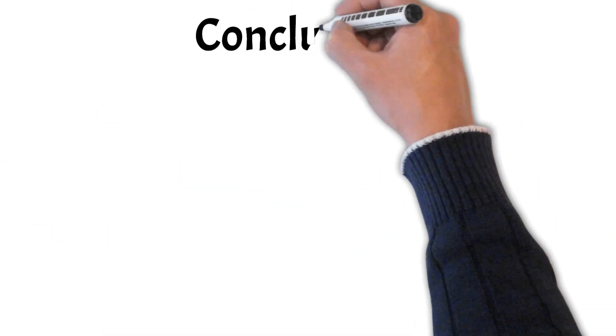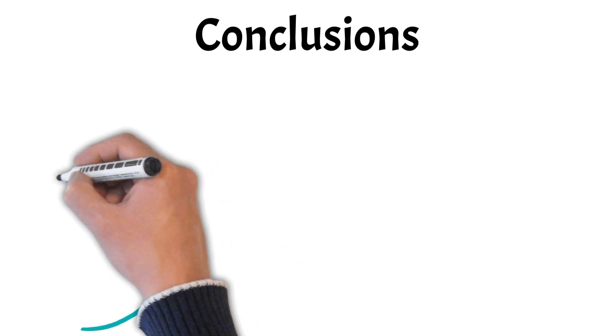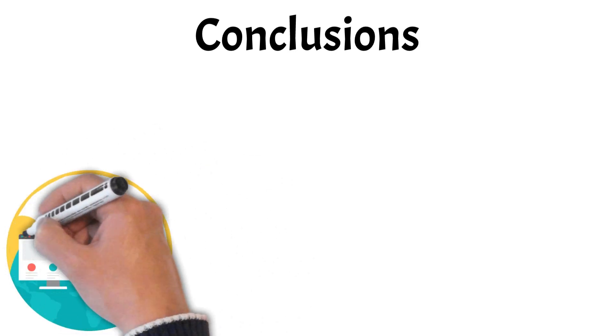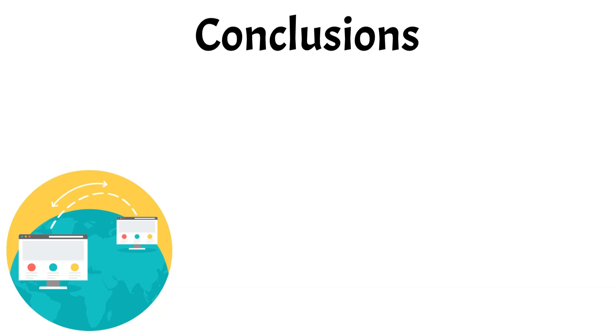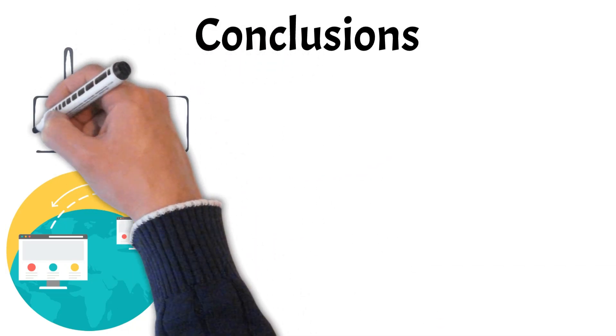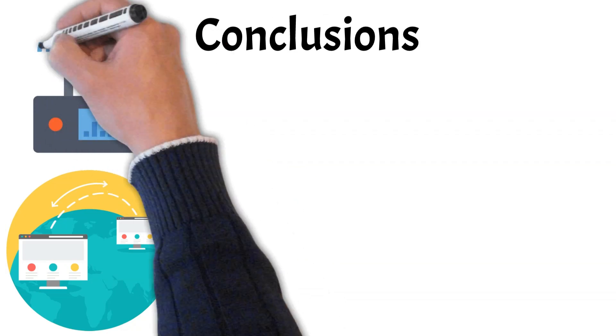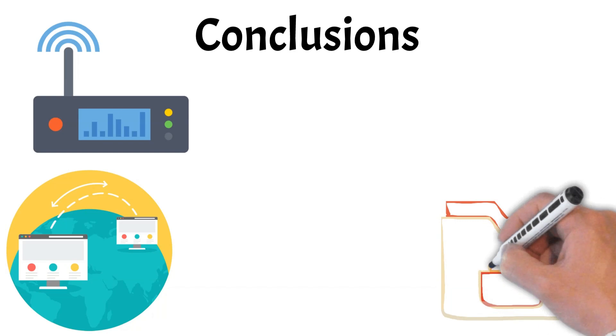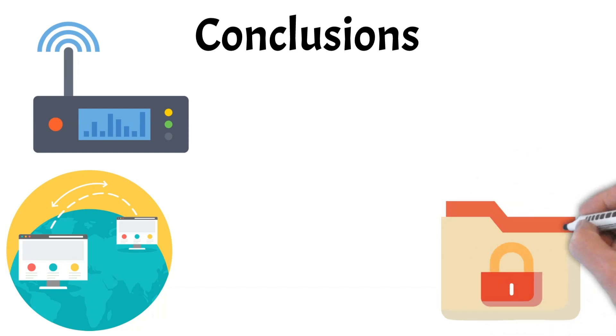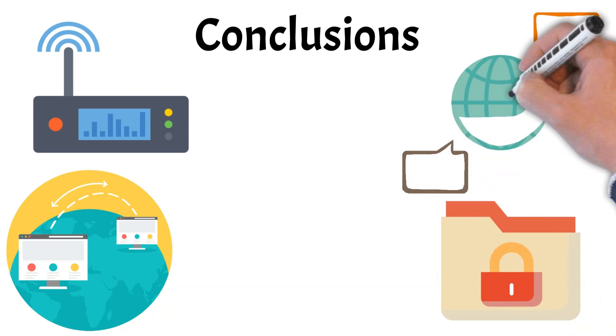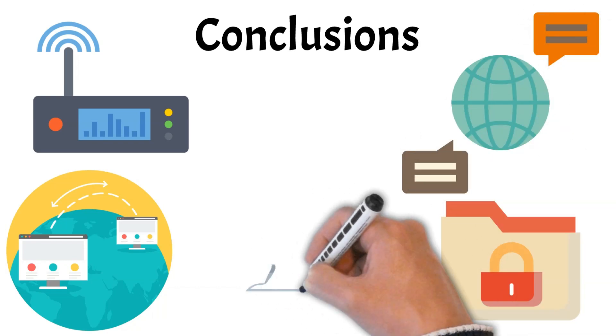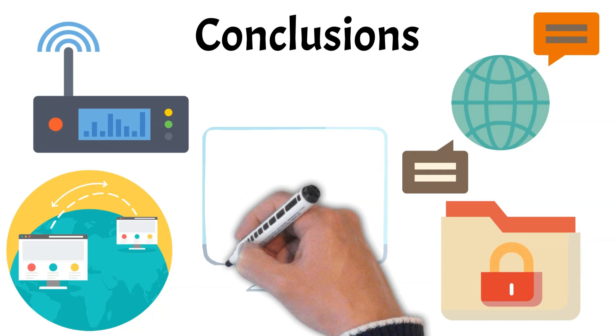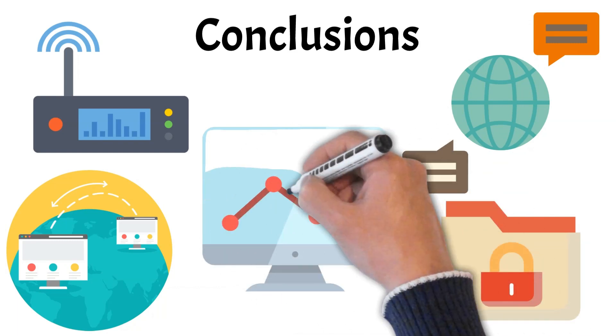In conclusion, understanding the different network devices and their roles provides a foundation for creating efficient, reliable networks. Each device, whether a router, switch, firewall, or gateway, serves a specific purpose in managing data flow, security, and connectivity across local and external networks. Knowing how and when to use these devices can help ensure smoother communication, enhance security, and better performance across your network setup, giving you the tools to navigate the basics of networking with confidence.